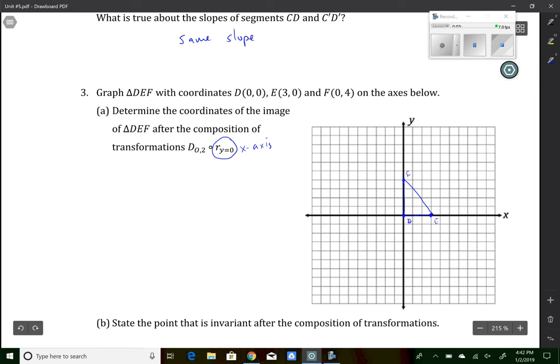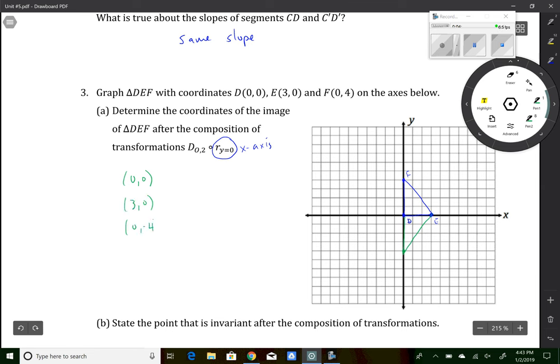Well, if I reflect that triangle over the x axis, I'll use a different color here. I'm going to have D and E staying in the same spot, but F is going to flip down here. So that blue triangle is the reflection over the x axis. Then it wants us to dilate that by scale factor of 2. So these new points are still 0, 0. Still 3, 0. And now it's going to be 0, negative 4. Well, if I reflect those, that's what you have.